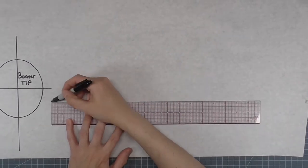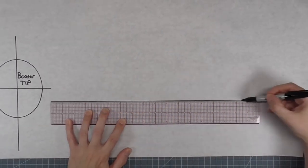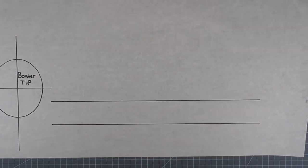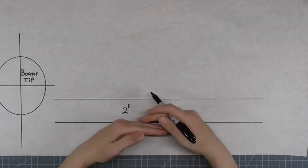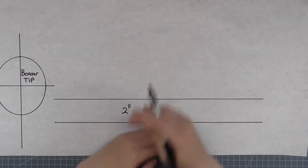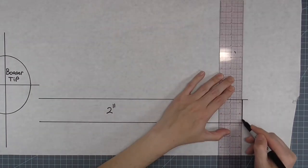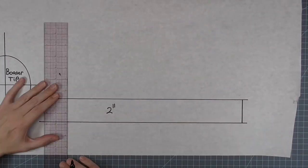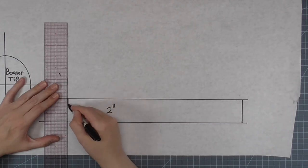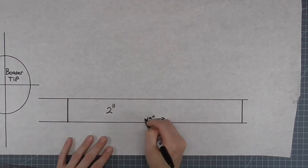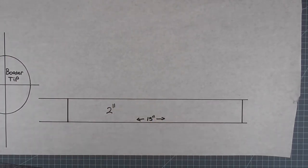Decide how tall you want your crown to be. In this case it's two inches, but you can make it as tall as you want. On one end, draw a perpendicular termination line. From that line, measure out the head size measurement, in this case fifteen inches, and draw a termination line at that point.